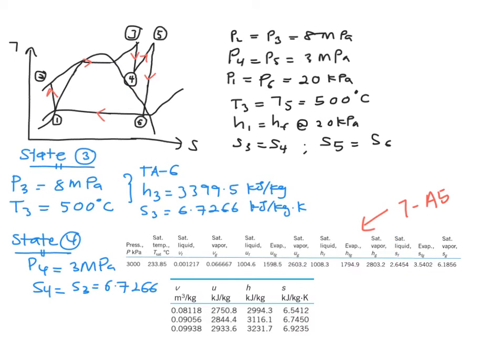This entropy 6.1 is actually at this line. So when you have 6.7 over here, automatically you need to read from your table A6. This is the justification that your state 4 is actually still in your superheated region. Therefore, you need to read your value from your table A6.